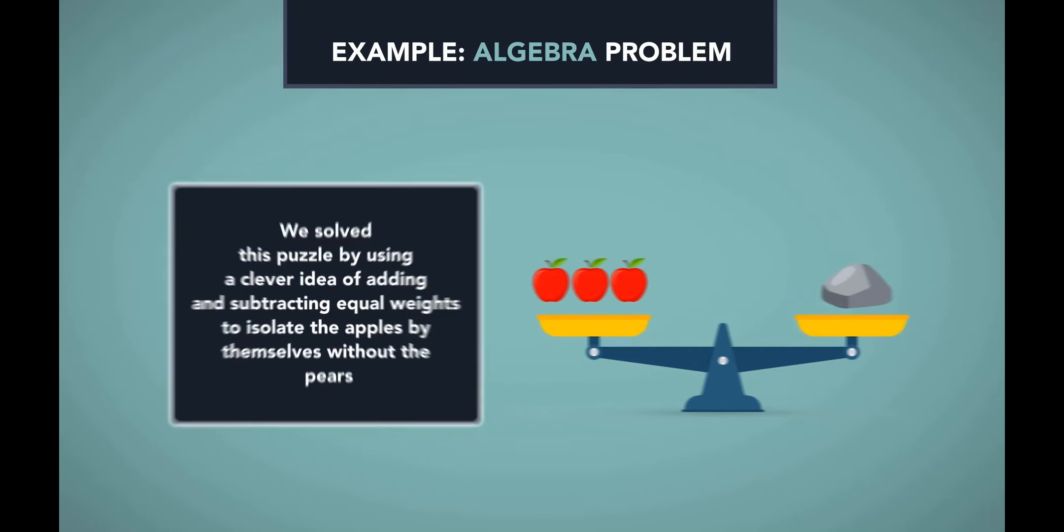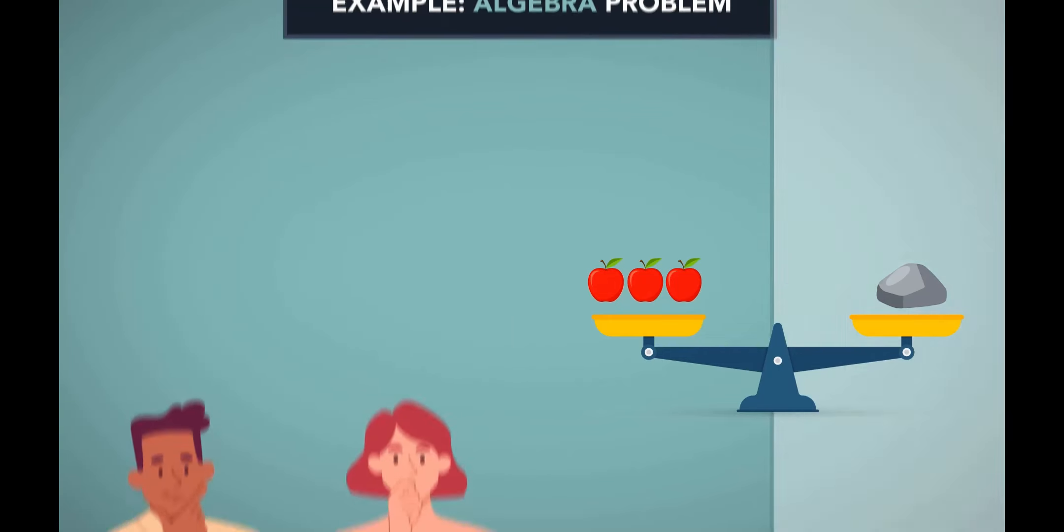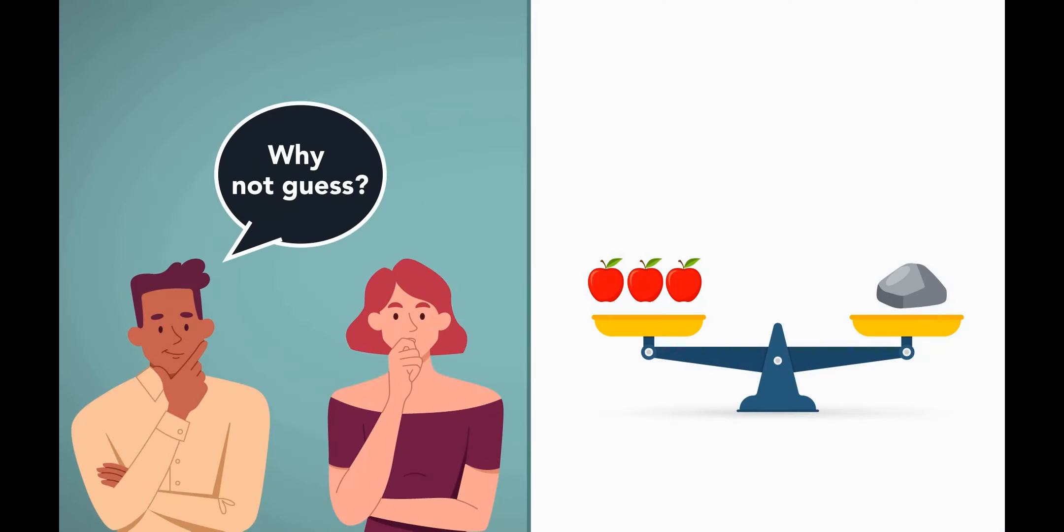We solved this puzzle by using a clever idea of adding and subtracting equal weights to isolate the apples by themselves without the pears. We didn't guess the answer. We were able to deduce it, almost like a detective in a mystery, from the information that we had available. At this stage, we can ask two questions.